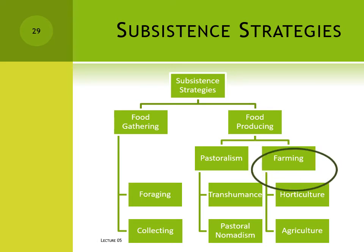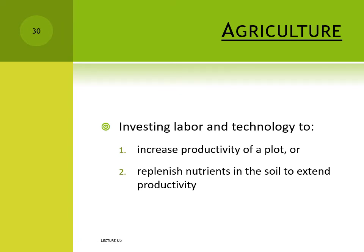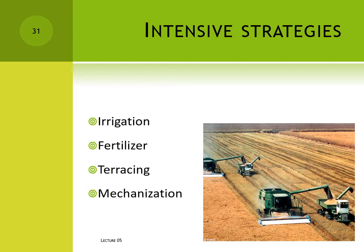The other kind of plant cultivation is agriculture. In agriculture, farmers use new technologies designed to either increase the productivity of a plot or replenish the soil's nutrients so moving to a new plot is not necessary. These technologies might include irrigation, fertilization, terracing, and mechanization. Agriculture requires more energy investment than horticulture, but the productivity is so much greater that it often allows individual farmers to produce much more food than they themselves need. Agricultural societies are productive enough that some of the population does not need to produce its own food at all – those people can spend their time in other pursuits and move away from agricultural land altogether. This is the origin of cities.